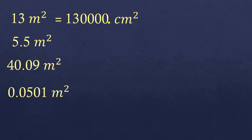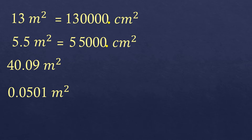Next, we have 5.5 square meters. We move the decimal point four times to the right — one, two, three, four — and fill in the spaces with zeros. So 5.5 square meters equals 55,000 square centimeters.